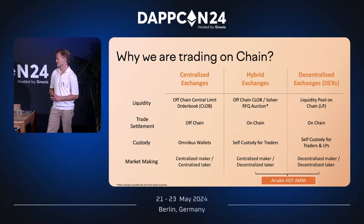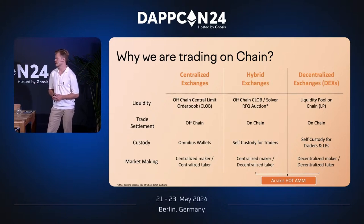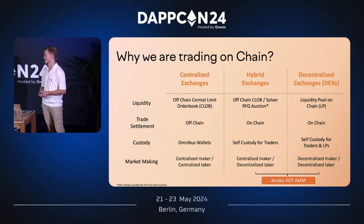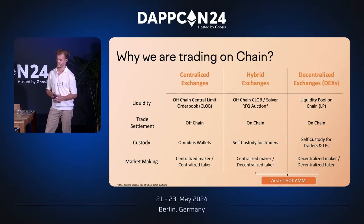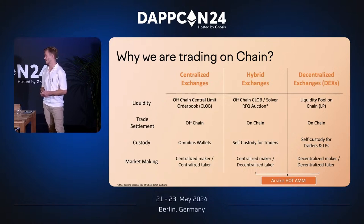Before we jump into HOT, I want to go back to the beginning. Why are we trading on-chain? If you want to trade digital assets you have three options: you can trade on a centralized exchange, a decentralized exchange, or a so-called hybrid exchange. Looking across dimensions like liquidity, trade settlement, custody, and market making — centralized exchanges have off-chain central limit order books where takers and makers meet, all settled off-chain. Hybrid exchanges also mainly use off-chain order books with solver auctions. Decentralized exchanges have a liquidity pool where LPs provide liquidity.